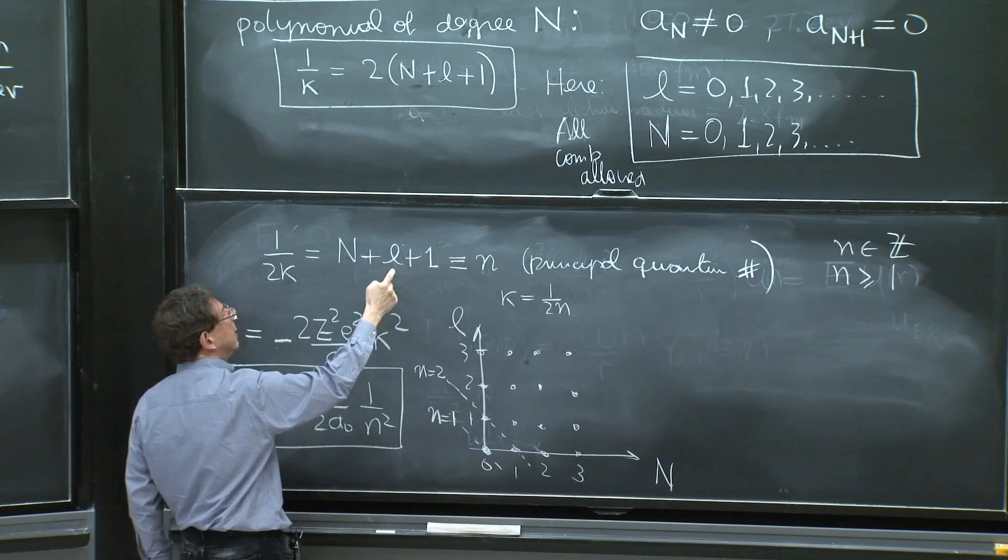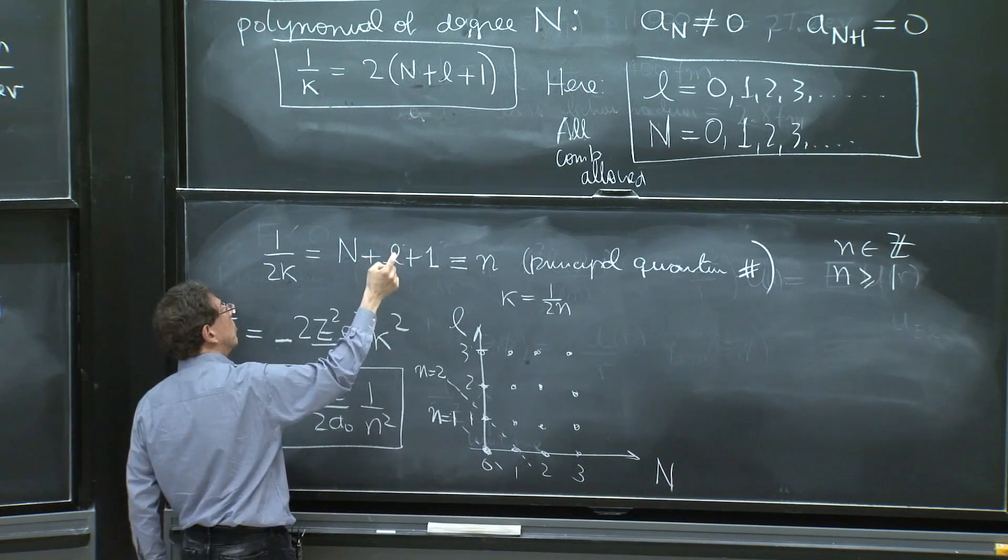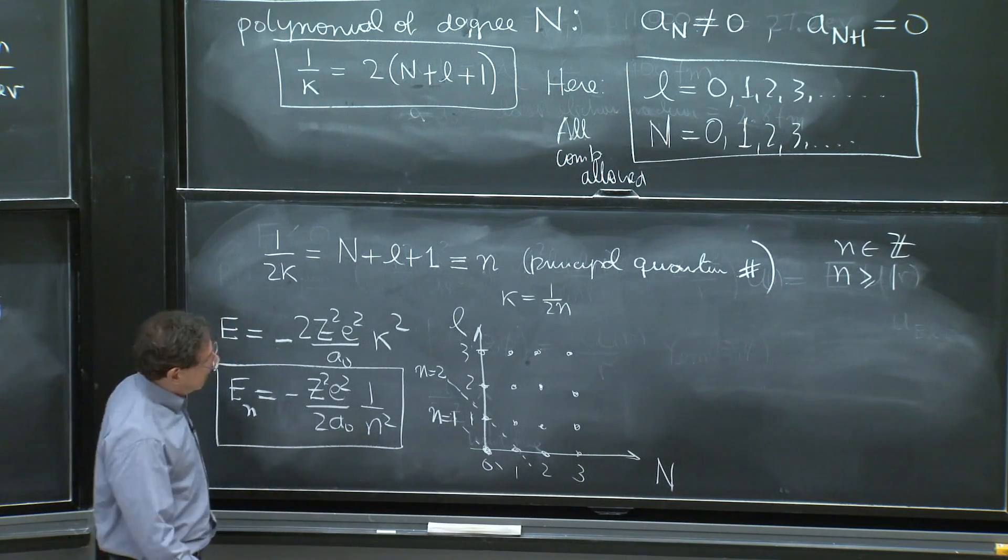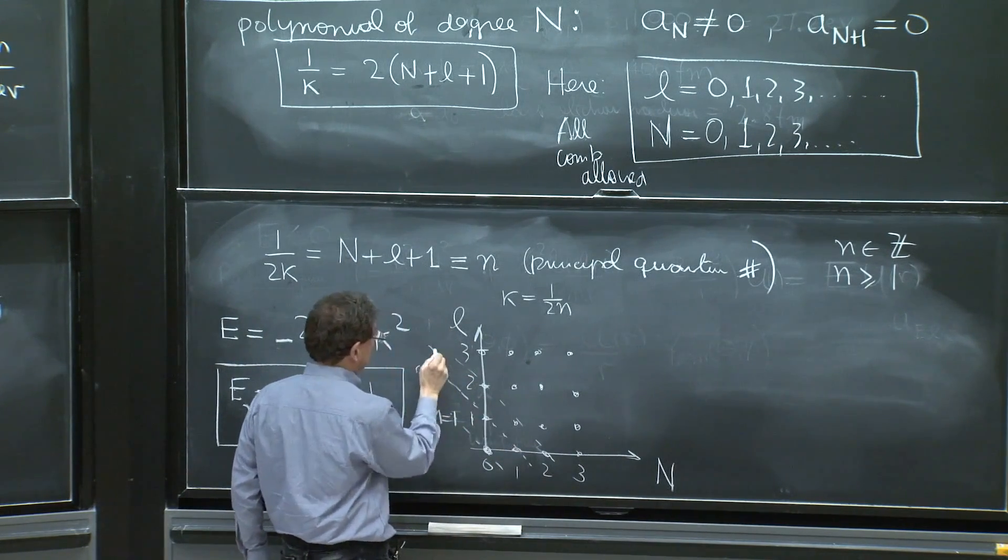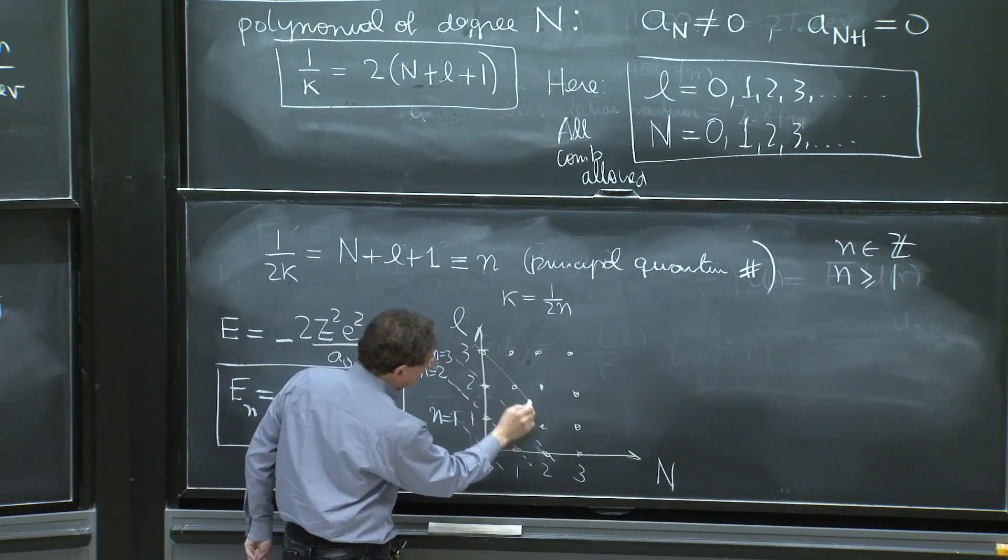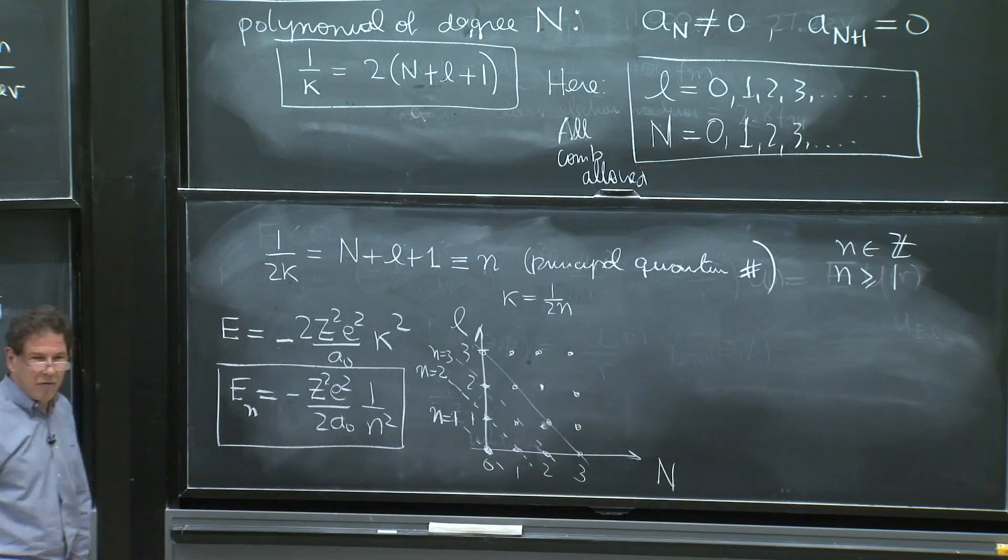n equals to 2 is realized by having 1 and 0, or 1 and 0, two values. Similarly, there are three things with n equals to 3. Four things, my graph is not that great, with n equal to 4, and more and more states.